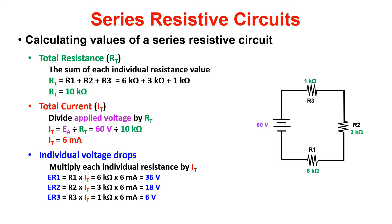ER1 equals the resistance value of R1, or 6K, times IT, which was 6MA, and that gives us 36 volts across R1. We can repeat the same process, substituting the values of R2 and R3 to get their individual voltage drops.